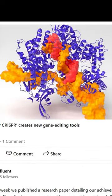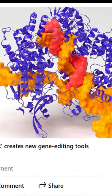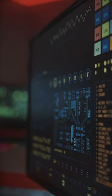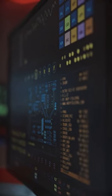Profluent, a company that uses artificial intelligence to design proteins, has created OpenCrispr-1, the world's first open-source gene editor made entirely by AI.